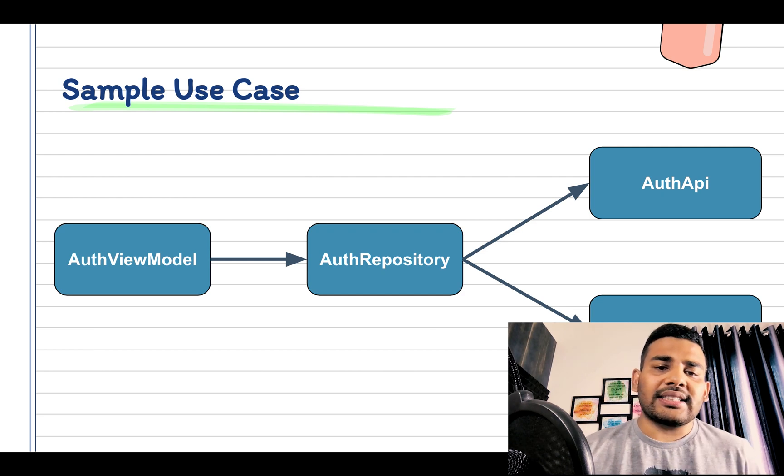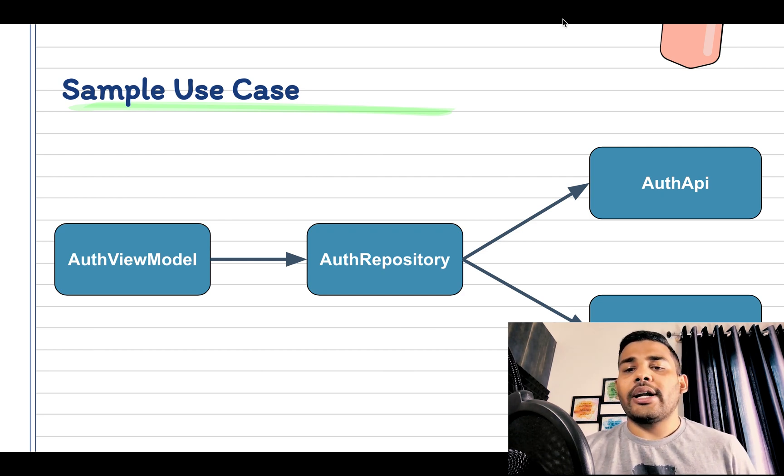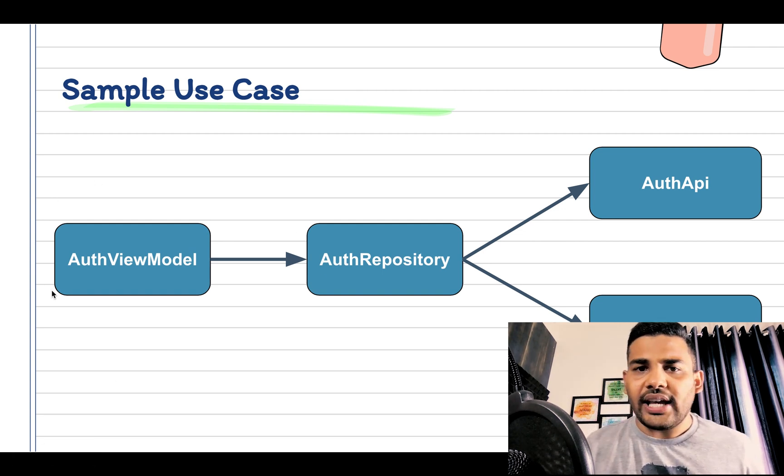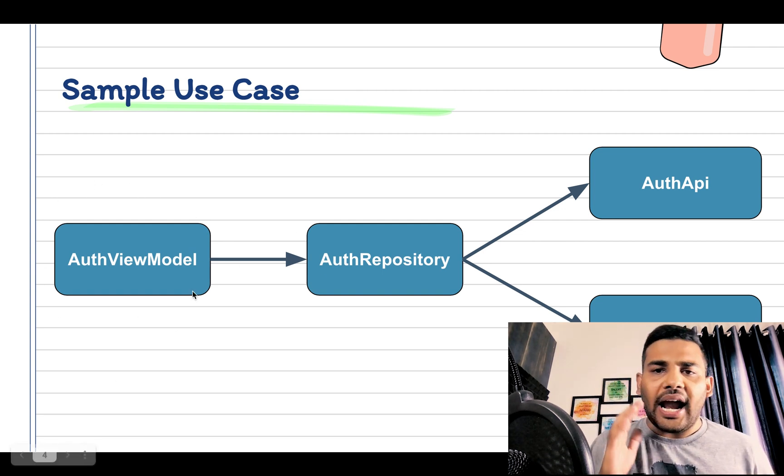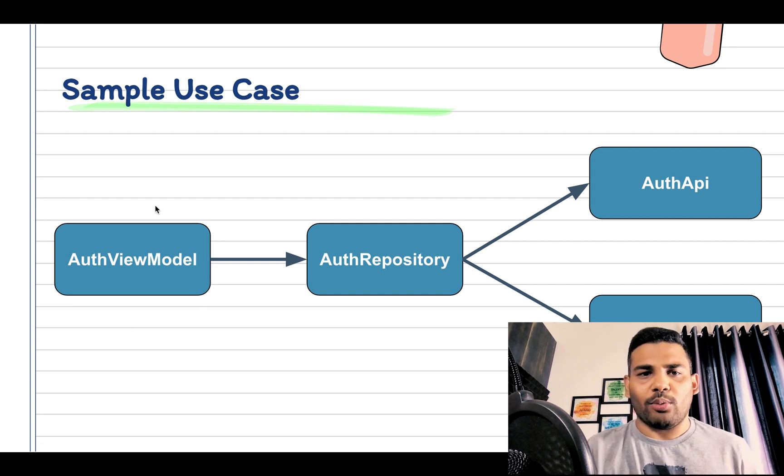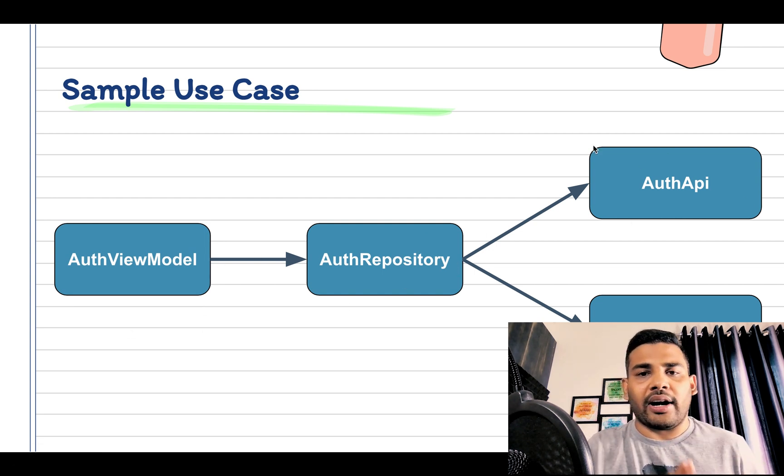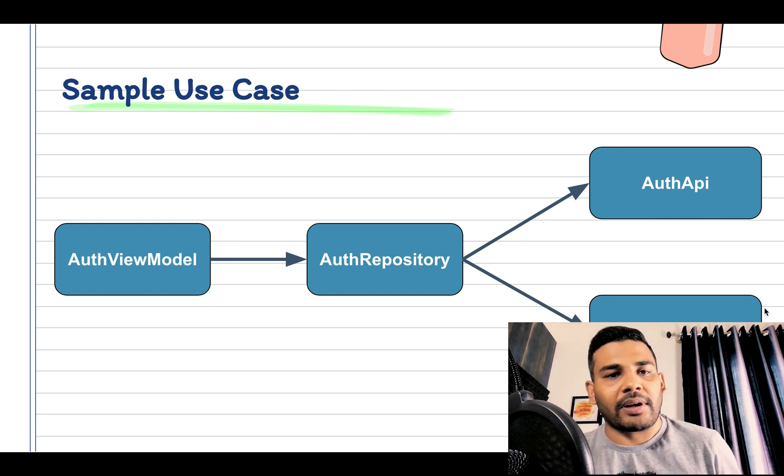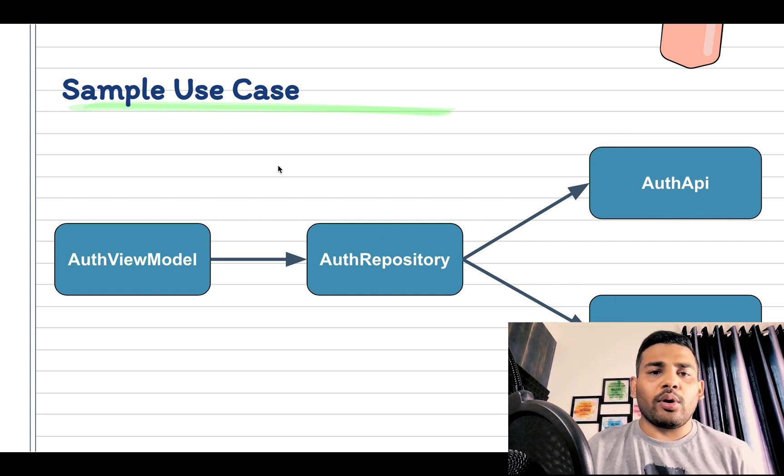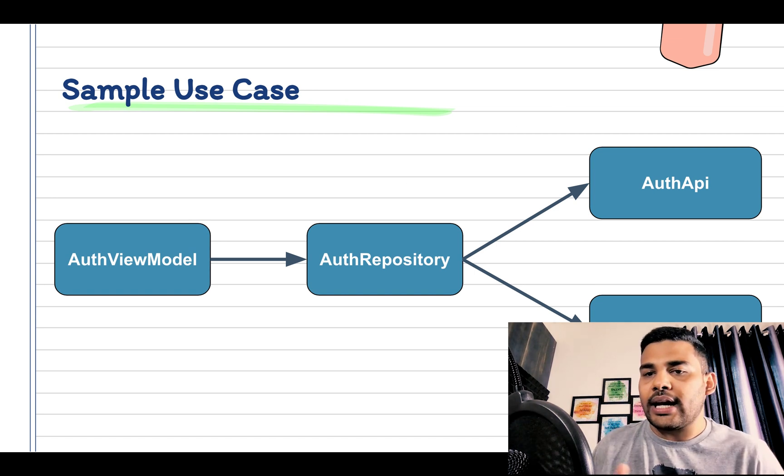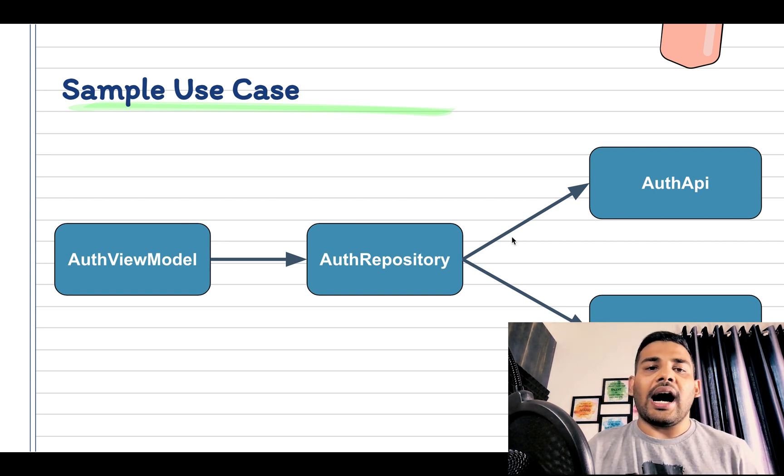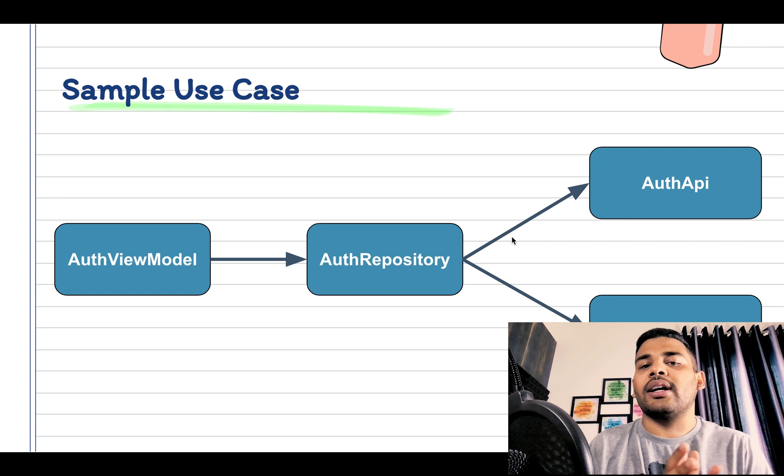Now let's see a sample use case according to the current project that we are working on. In our current project we have an authentication flow with AuthViewModel that requires AuthRepository, and AuthRepository requires AuthAPI and UserPreferences. So AuthRepo is a dependency for ViewModel, and AuthAPI and UserPreferences are dependencies for AuthRepo.